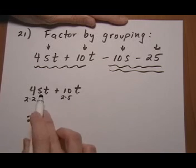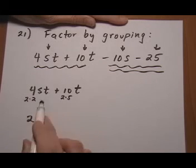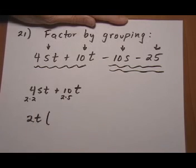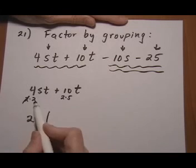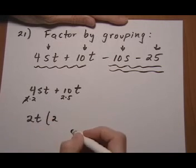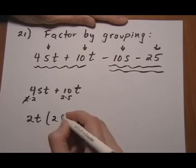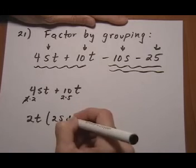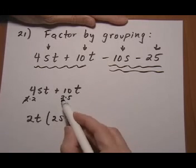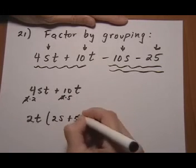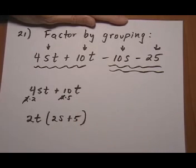And I cannot pull out an s, but I can pull out a t because they both have a t. 2t comes out, leftovers in parentheses. So for the numbers, I took a 2, so I have a 2 left. I took a t, so I have an s. Put the plus sign down. I took out the 2, I have a 5. I took out the t, so there's nothing else left.